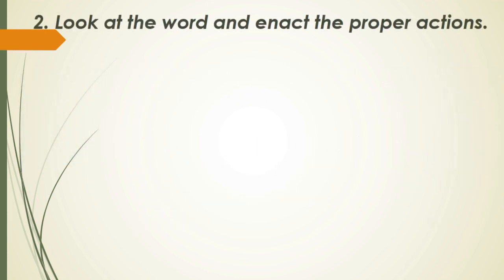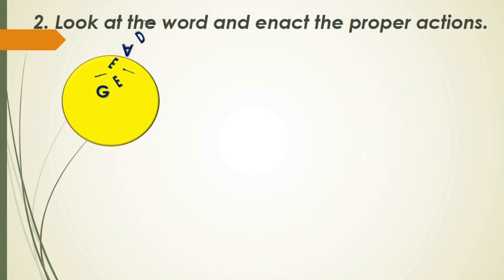Look at the word and enact the proper actions. Now you know the meaning of yellow signal, red signal, and green signal. You have to act — show me the action — what you will do when you observe each signal.